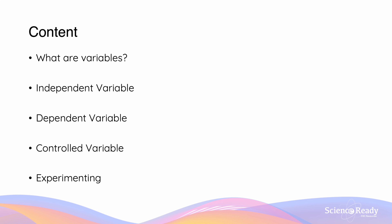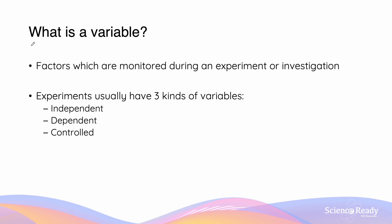We're going to be looking at what variables are, and also how we can identify these variables for different experiments. When we are conducting an experiment, there are multiple so-called factors which are going to affect the outcome. We monitor these factors to see what their effect is on the outcome of the experiment. These factors we can also call variables, and in the experiment there are usually three different types of variables that we want to identify.